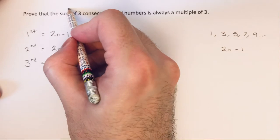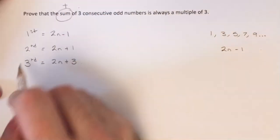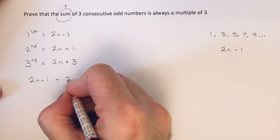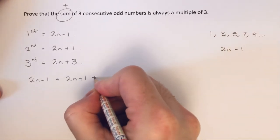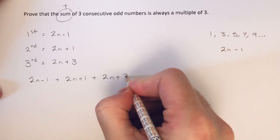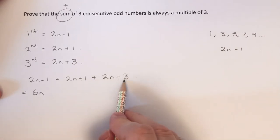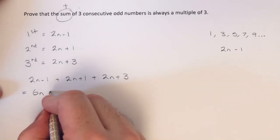So we now need to add these up because sum means we need to add. So we've got 2n minus 1 plus 2n plus 1 plus 2n plus 3. So if we simplify this expression, 2n add 2n add 2n is 6n. And our numbers are minus 1 plus 1 is 0, add 3 is plus 3.